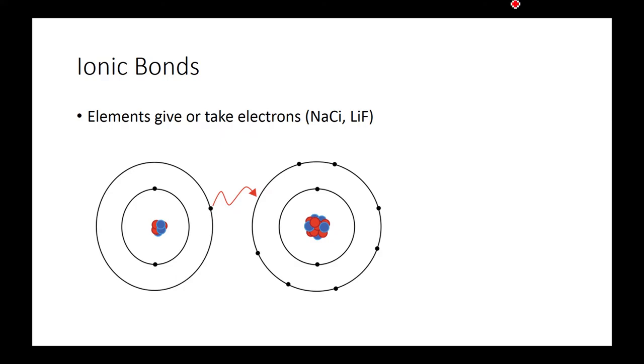So next thing we're going to talk about ionic bonds. Elements give or take electrons. If you look at the picture right there, the element right here is giving one electron to this one. So now this is stable because this orbital shell is no longer needed, and this shell right here is now filled. Some examples are sodium chloride and lithium chloride.